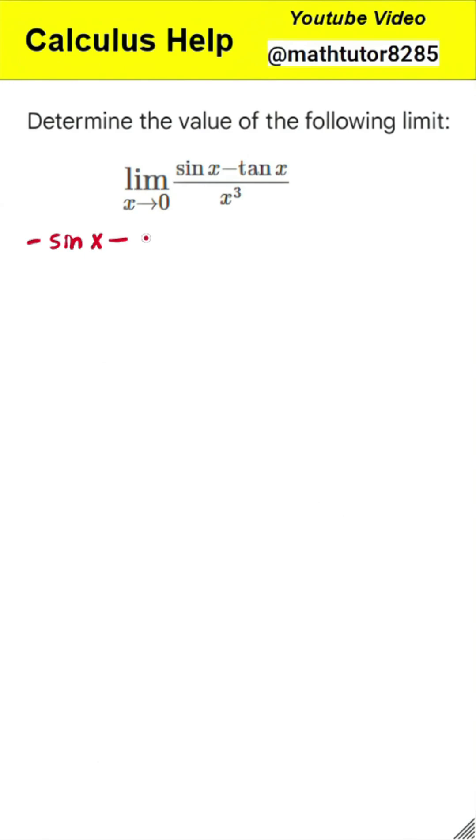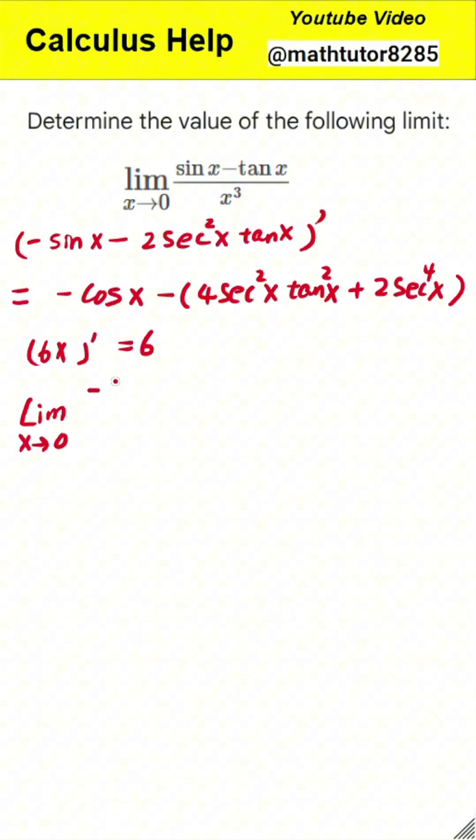Next step, third application and final evaluation. For our third application, the derivative of the numerator is negative cosine of x minus the quantity of 4 times secant squared of x times tangent squared of x plus 2 times secant to the fourth power of x. The derivative of the denominator, 6 times x, is simply 6.